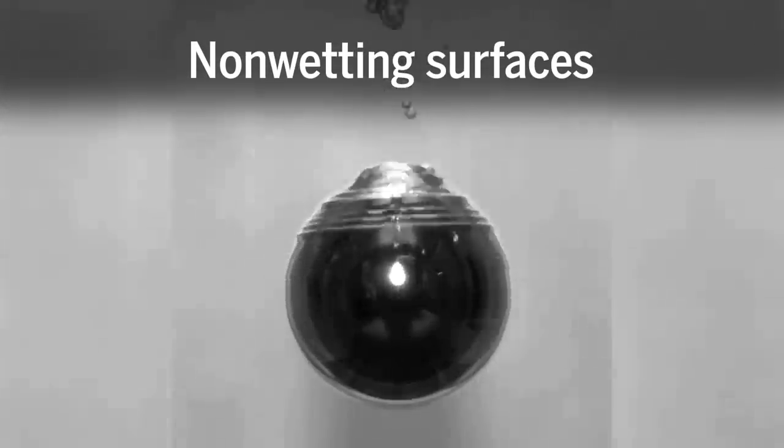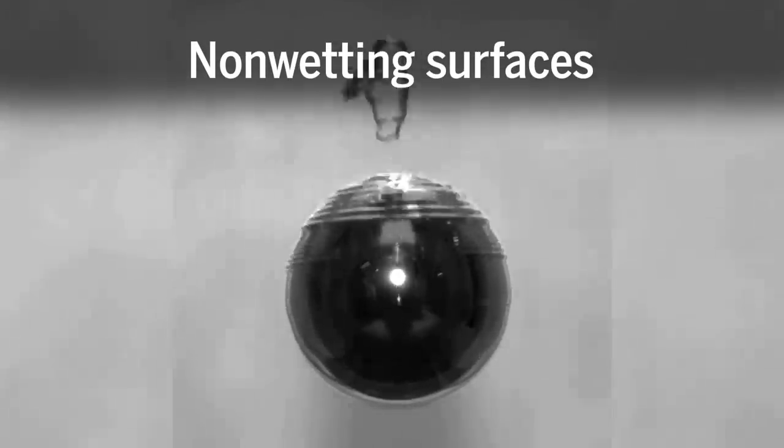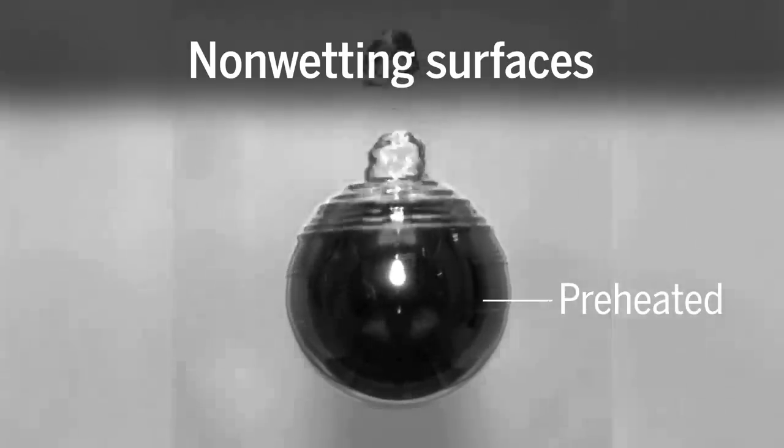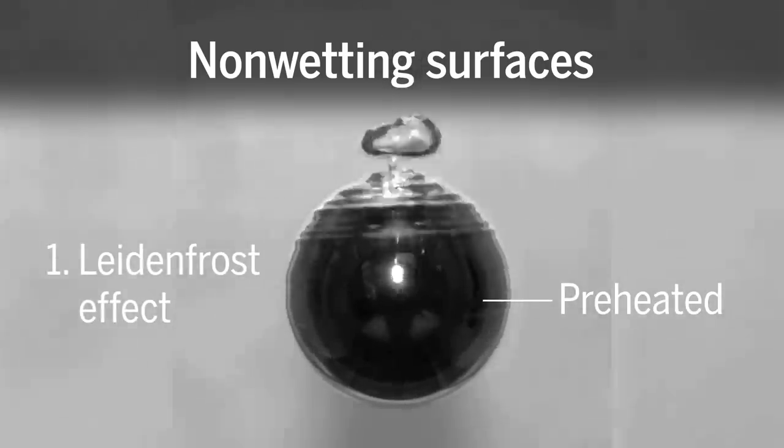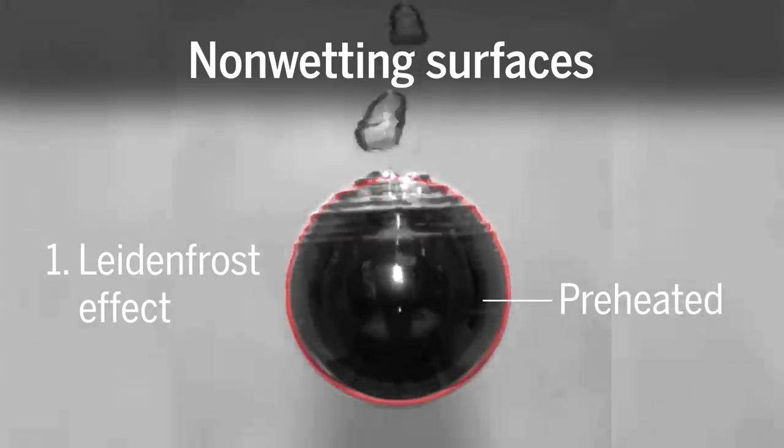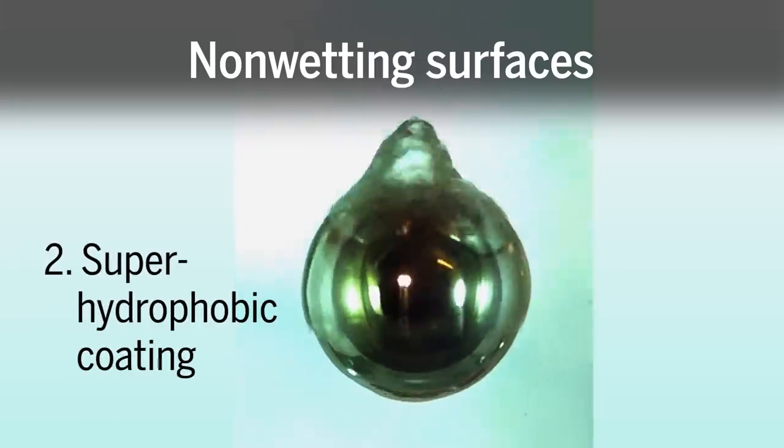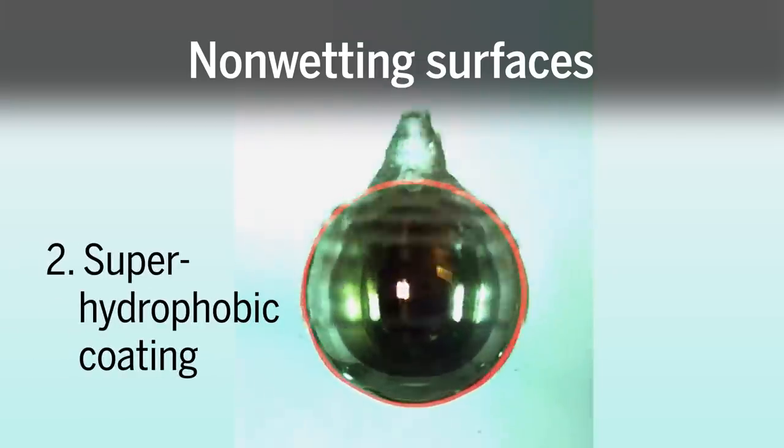By creating a non-wetting surface using one of two approaches. Heating up a metal ball so hot that what's called a Leidenfrost effect occurs, where a vapor layer forms between the ball and the liquid, like water beading on a hot stove. Or coating the metal ball with a hydrophobic or super water repellent substance.